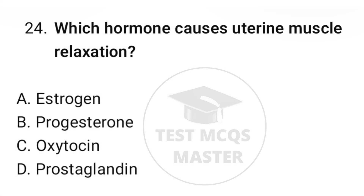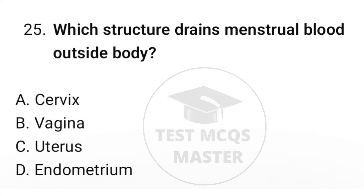Question number twenty-four: which hormone causes uterine muscle relaxation? The correct option is B, progesterone. Question number twenty-five: which structure drains menstrual blood outside the body? The correct option is B, vagina.